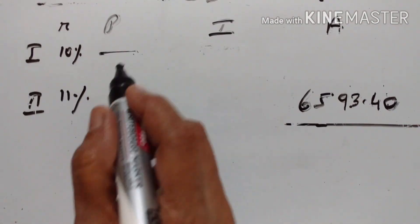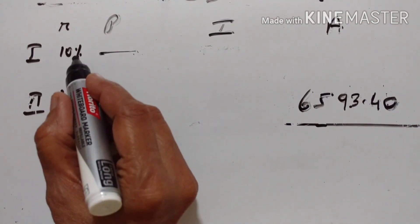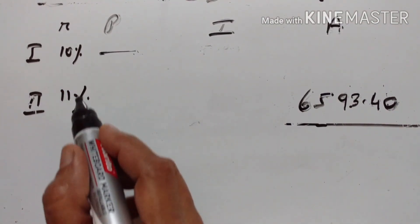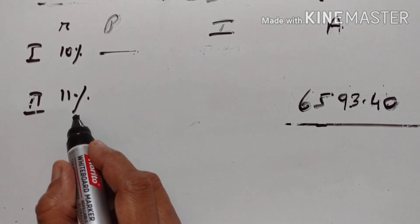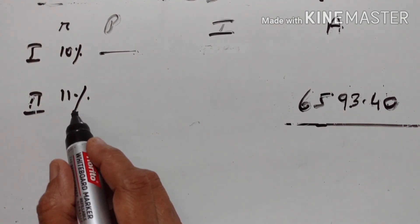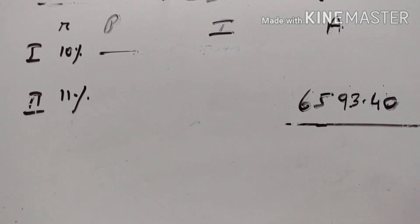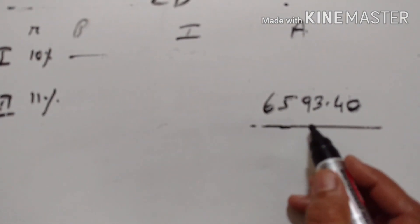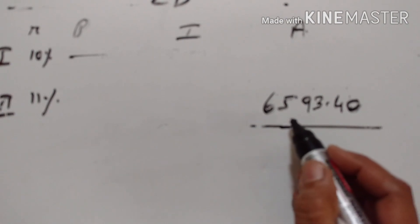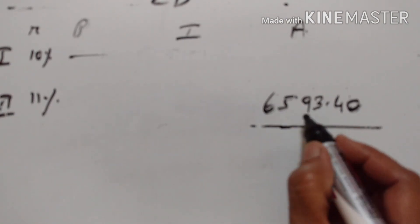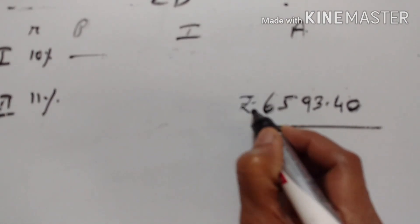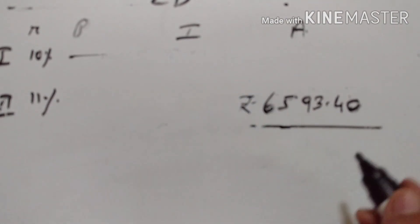We have to find the principal. The rate for the first year is equal to 10%, for the second year it is 11%, and the amount at the end of the second year is equal to Rs. 6593.40.